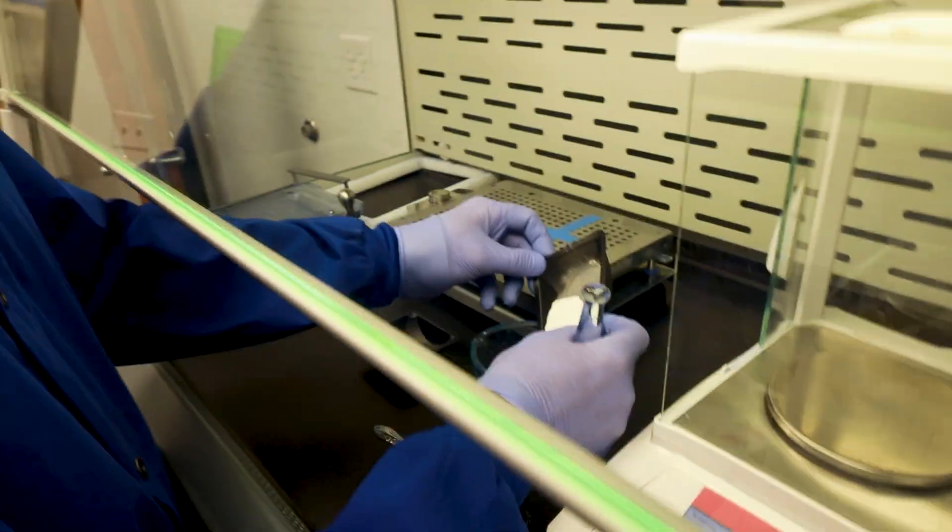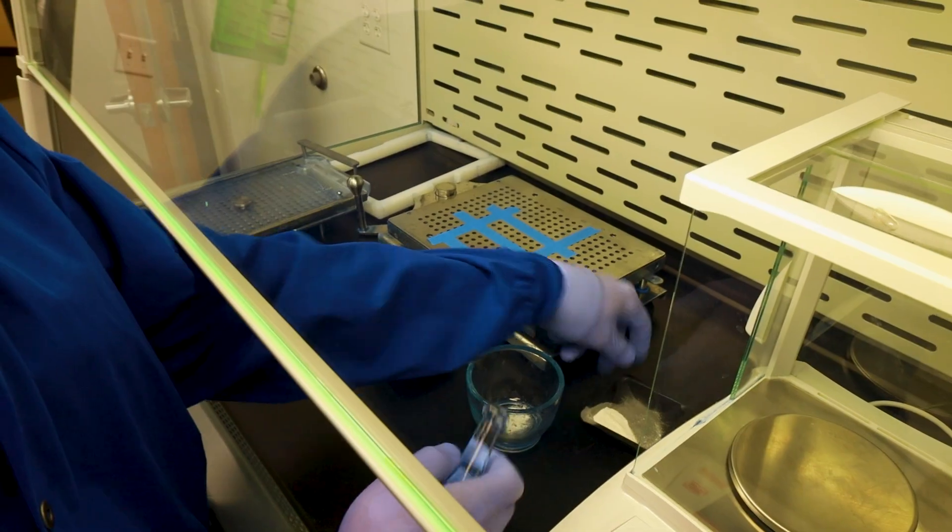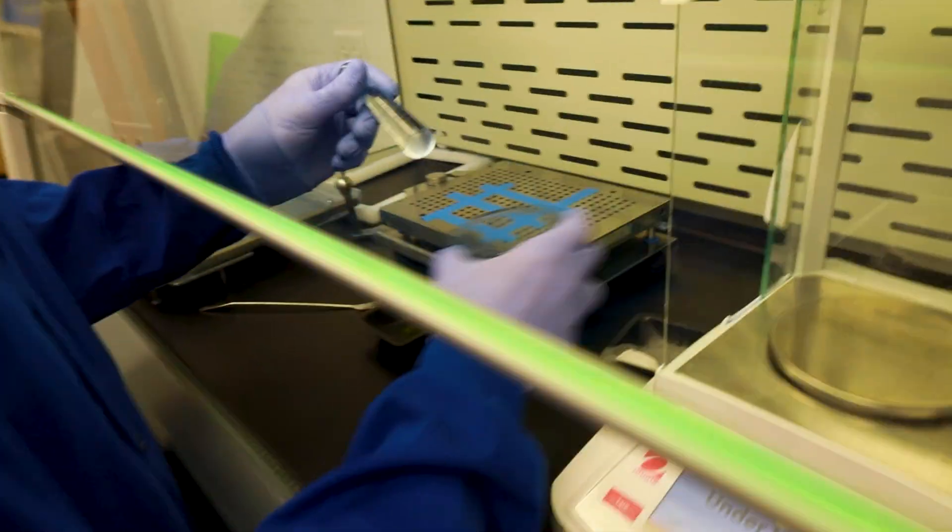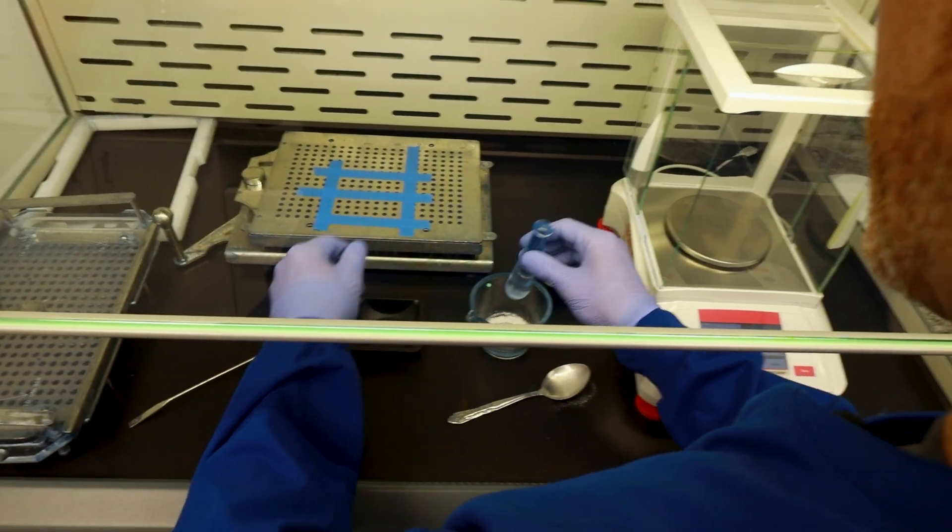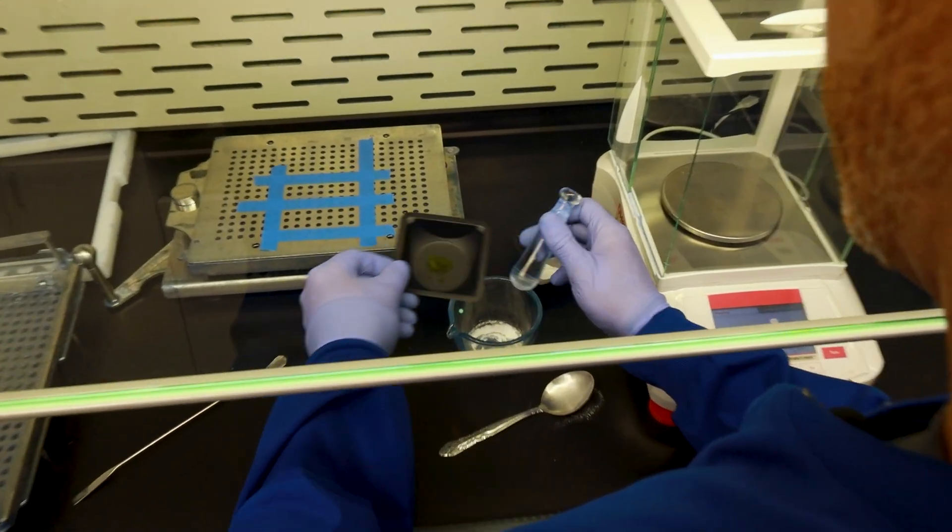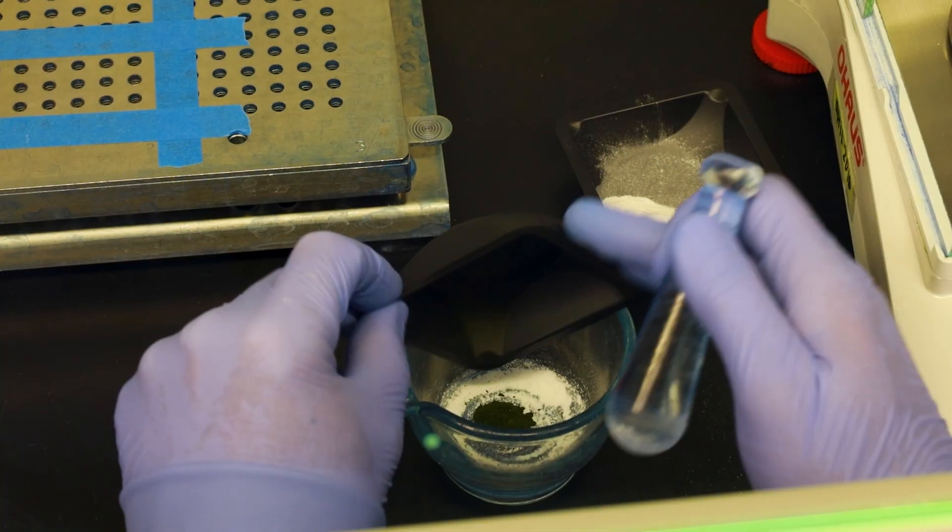So when you're mixing this up the old-fashioned way, which is what I'm doing, you want to put a little bit of your base powder in your mortar so that you fill up those cracks and your API, your methylene blue, does not get in there and you lose some of your drug.